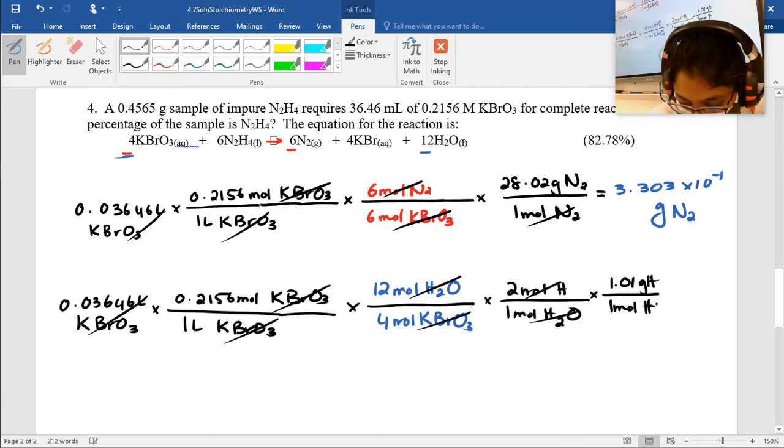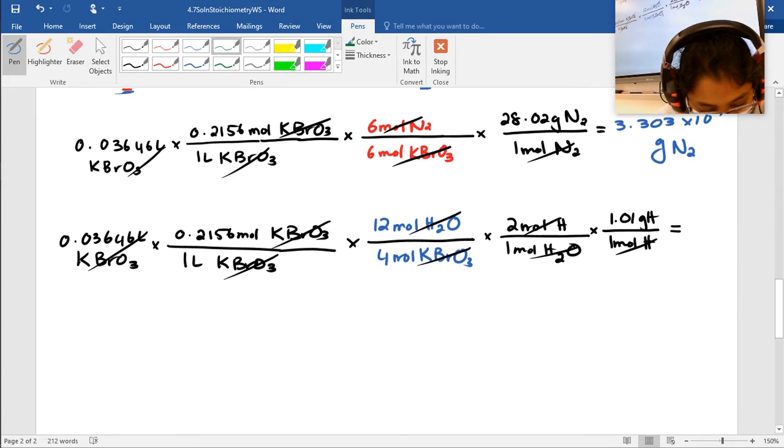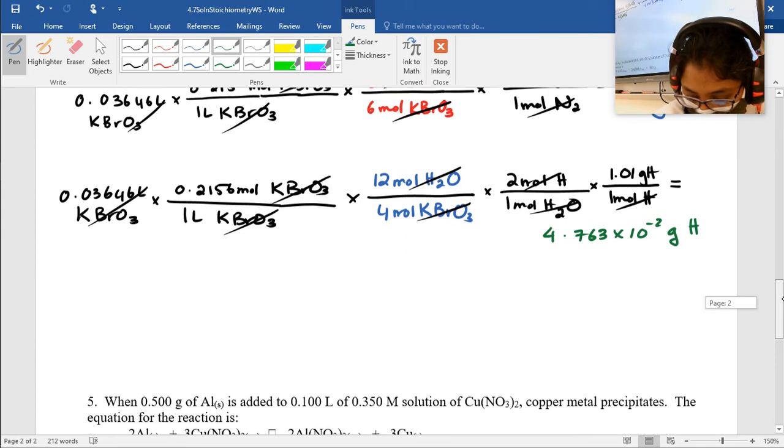I love that. And that is equal to how many grams of hydrogen I'll get. 4.763 times 10 to the negative 2 grams of H. So that is the total mass of hydrogen there. And then I have N2 as well.